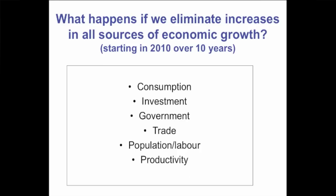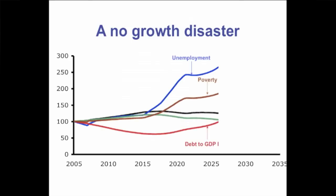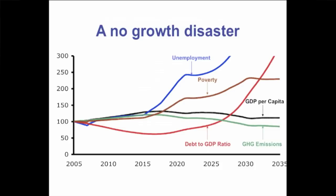What would happen if we took out all of the impetus for growth in this economy? You might expect it to be disastrous, and you wouldn't be far wrong. In this scenario, I started eliminating the drivers of growth from 2010 and brought them down to zero by 2020. Unemployment goes off the graph. Poverty shoots way up because unemployed people are very often made poorer by that experience. The government's debt-to-GDP ratio becomes completely unmanageable as revenues go down and expenses go up. Ultimately there is no growth, GDP per capita settles out, and greenhouse gas emissions are about where they were in 2005.